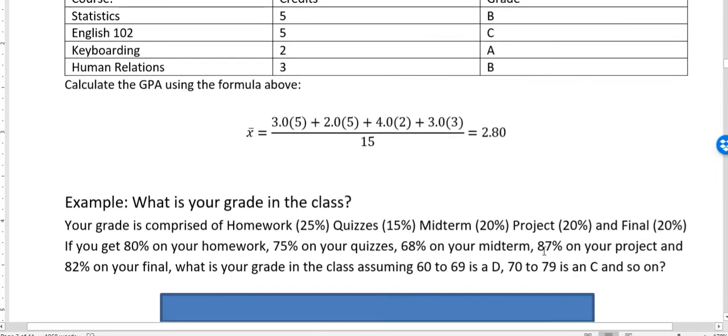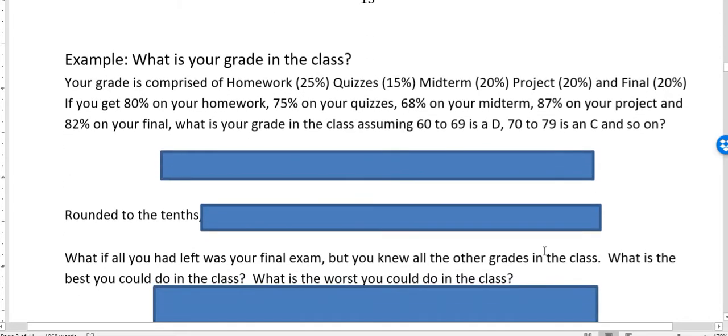Okay, so the other example is this one. What is your grade in a class? So if your grade is comprised of homework, quizzes, midterm, project, and a final, and you know what percent you get on each of those things, what would your grade be? Well, this is a weighted mean, and this is how many people run their classrooms. And if you're using Canvas, those usually have a percentage that's attached to each type of thing, homework or quiz.